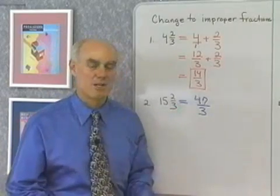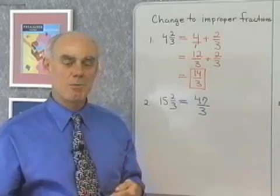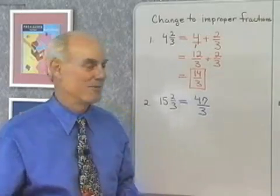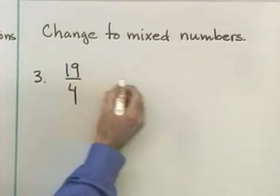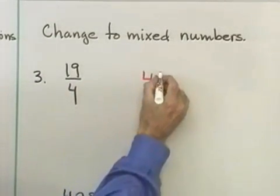Let's go the other way now, and take an improper fraction, and change it into a mixed number. We have 19/4. I want to write this as a mixed number. So, what I'm going to do is divide 4 into 19.